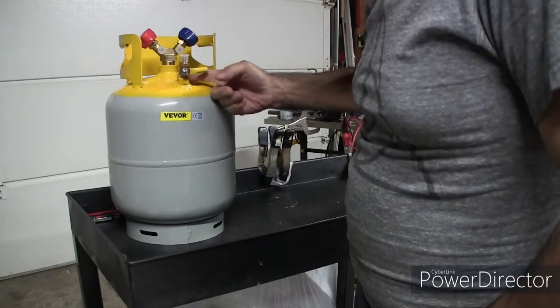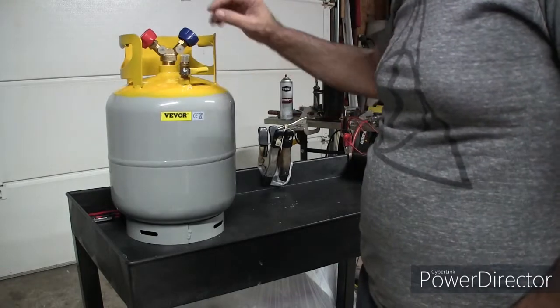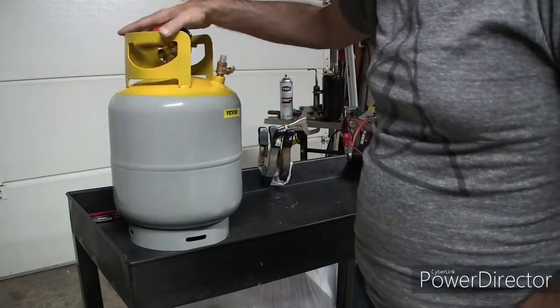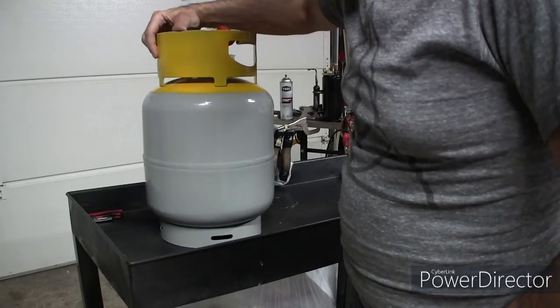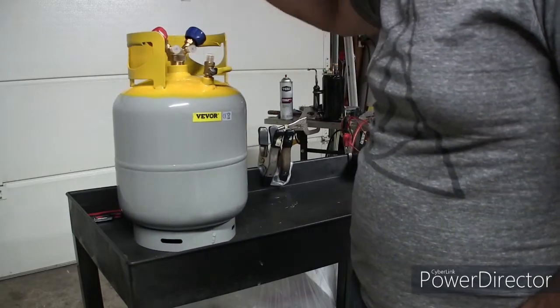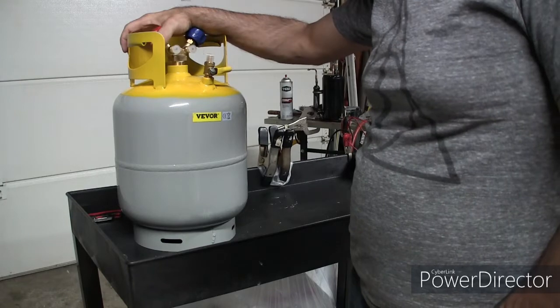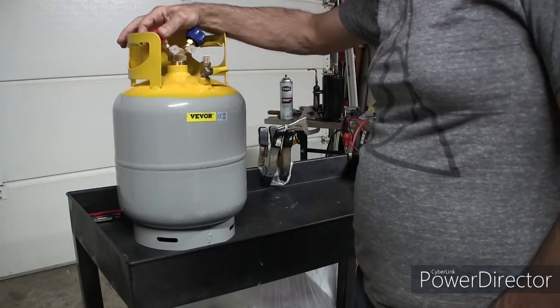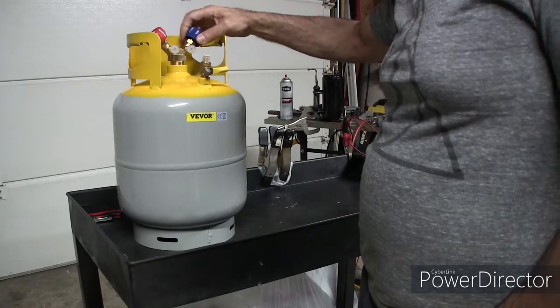This weld here doesn't look, it's probably strong, but it doesn't look real great. The rest of them look okay. I wish I had a scale to put it on because it would be nice to measure the refrigerant going in here. I don't think I have a scale that will measure low.